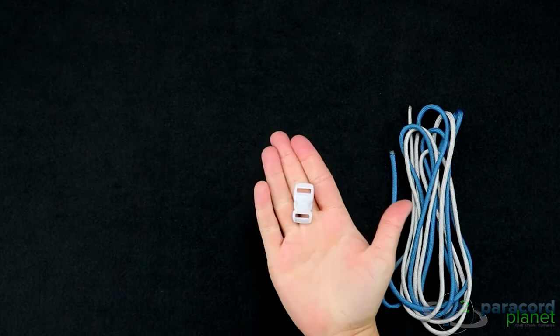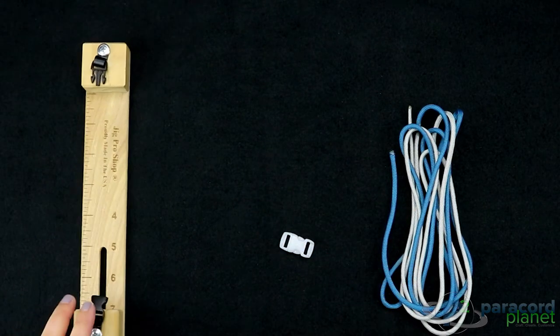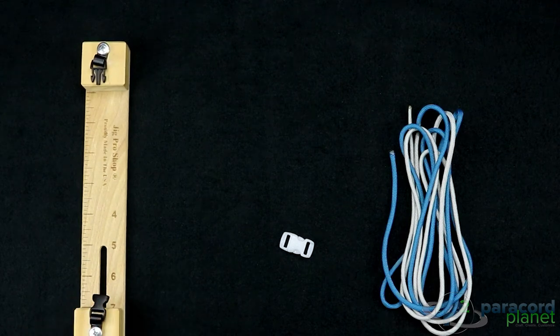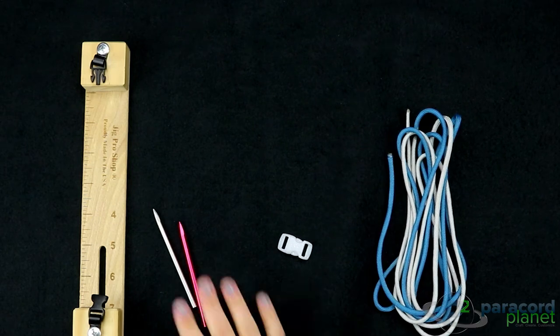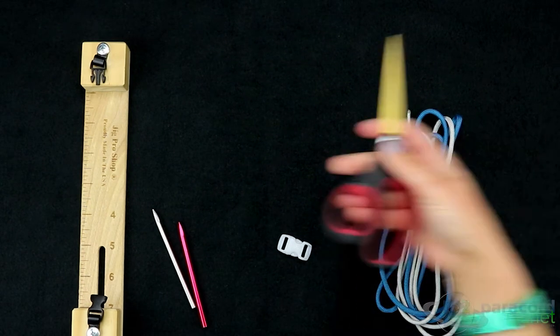I'll also be using a buckle, and this is one of our new glitter buckles. A jig is helpful in this one, you don't necessarily need to use it but it will help. I'll use a couple of fids at the end of the bracelet, a lighter, and scissors.